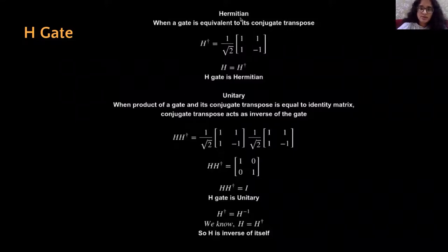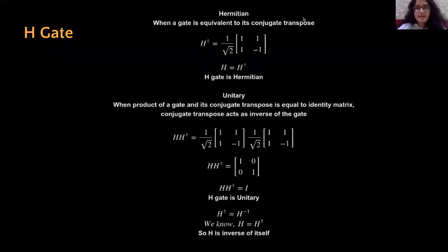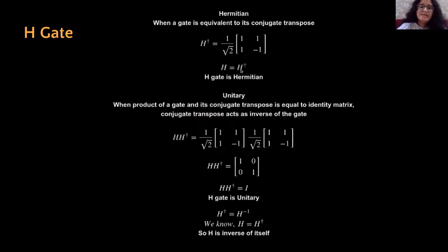We check if the H gate is Hermitian by taking its conjugate transpose. The conjugate step involves changing the sign of the imaginary part of every element, but since there is no imaginary part, no sign changes occur. Then taking the transpose of the matrix, what we get is the same as the H matrix, so the H gate is Hermitian. Multiplying H and its conjugate transpose together gives the identity matrix, confirming the H gate is unitary.